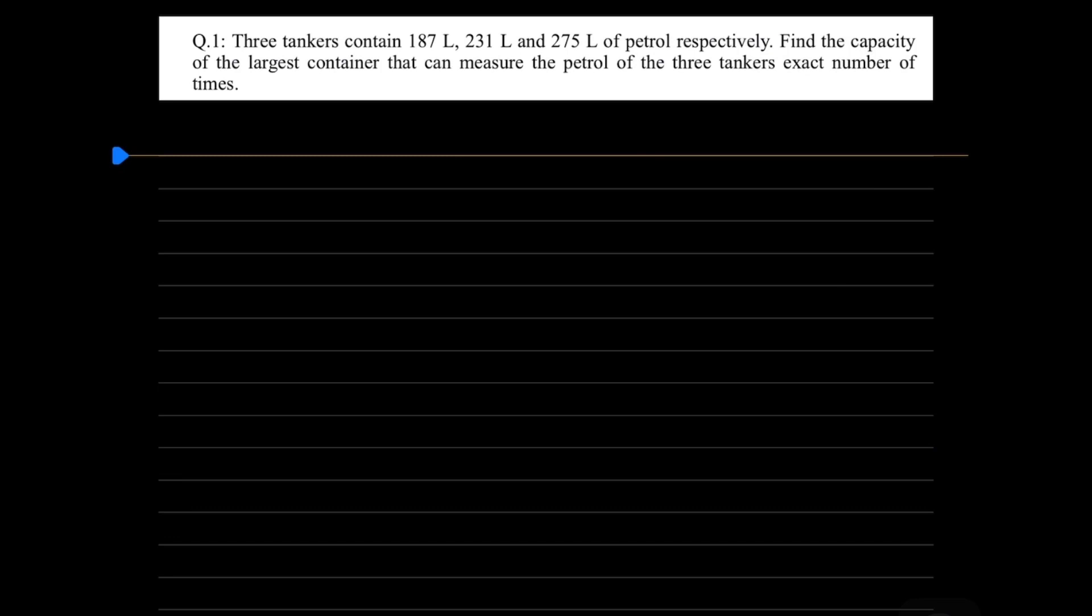The first question of the assignment is that there are three tankers which contain 187 liters, 231 liters, and 275 liters of petrol respectively. You need a large container capacity to measure the three tankers in which you can measure the exact number of times.